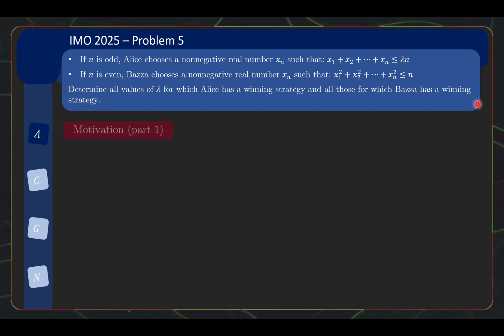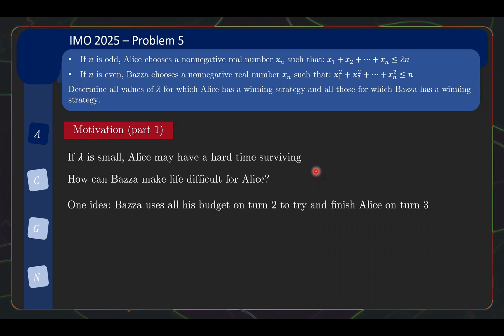So let's do some exploration. One thing you immediately notice is that the budget on the right side is different for Alice and for Bazaar. If lambda is very small, it looks like Alice's budget will be very tight. So obviously as the turns go by, each person's budget will increase, but Alice's one is going to increase at a slower rate if lambda is very small. So it looks like if lambda is small, Alice may have a hard time surviving. So how can Bazaar make use of this to make life difficult for Alice if lambda is small? Well, one idea is maybe Bazaar can even try and end the game very quickly. Bazaar might want to use all his budget on turn 2 to put in as much as possible, so that when Alice receives the game in turn 3, this sum x1 plus x2 might already be bigger than 3 lambda, then Alice straight away loses, Alice cannot pick an x3.